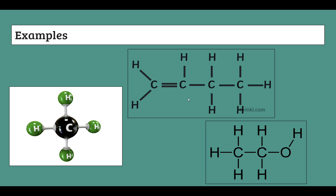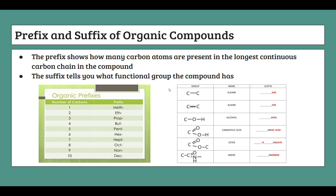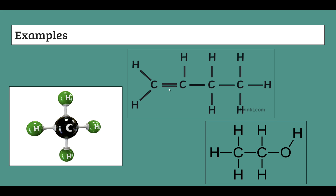Now let's try the next one. Here we have a double bond and four carbons: one, two, three, four. With four carbons and a double bond, this is going to be but- with the -ene suffix, giving us butene. But wait — is butene the only way to name this? What if we move the double bond between different carbons? This introduces the idea of isomers.